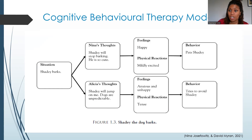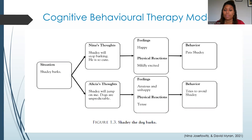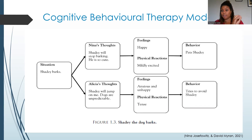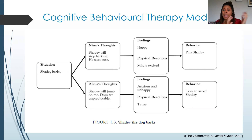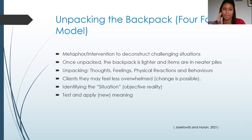For the second person, who was afraid that the dog is going to jump on them and thinking that dogs are very unpredictable, they're going to feel more anxious and unhappy. The physical reactions could be tension in their body, and then they're going to try and avoid the dog. So that very objective situation — I find often in therapy I'm trying to help folks see just that occurrence, and then identify the thoughts, identify the feelings and the behavior. And then how can we look at readjusting some of those thoughts to affect the pathway?